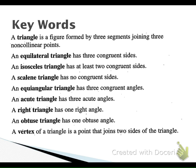An acute triangle has three acute angles. An obtuse triangle has one obtuse angle, and a right triangle has one right angle. The vertex of a triangle is the point that joins two sides of a triangle.